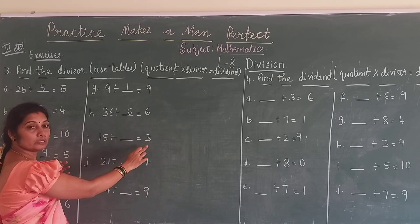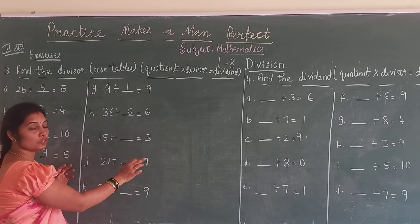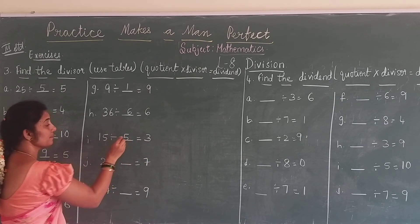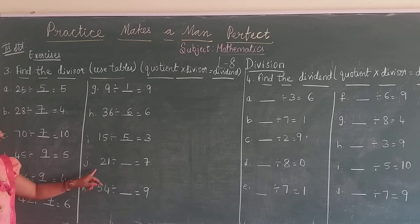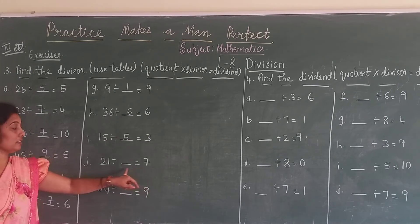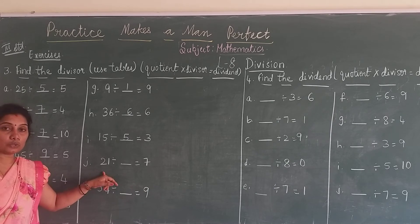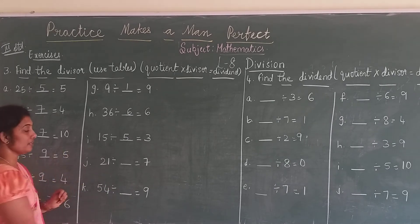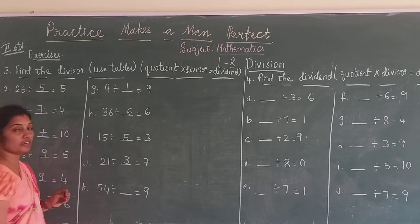So 3 ones are 3, 3 twos are 6, 3 fives are 15. 21 divided by that will be equal to 7. 7 ones are 7, 7 twos are 14, 7 threes are 21. So 3 is your divisor.